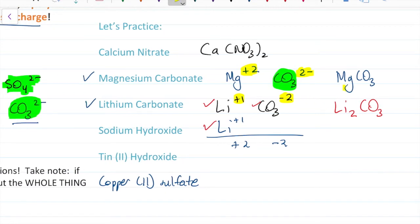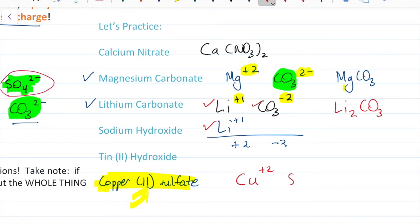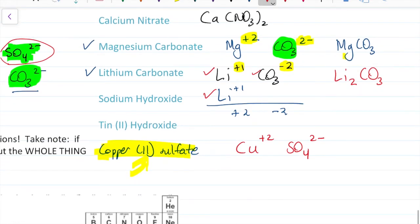Let's write the formula for copper(II) sulfate. Why the Roman numeral two? Remember, copper is multivalent — it can be plus one or plus two. The Roman numeral tells you it is plus two. Sulfate is SO4²⁻, which is one you'll want to memorize. The charges already balance, so the formula is CuSO4. You're going to see that compound a lot in your lab.